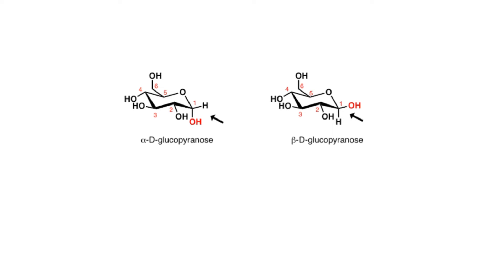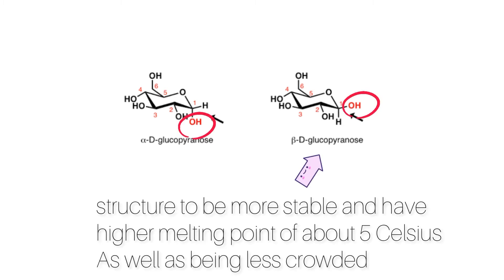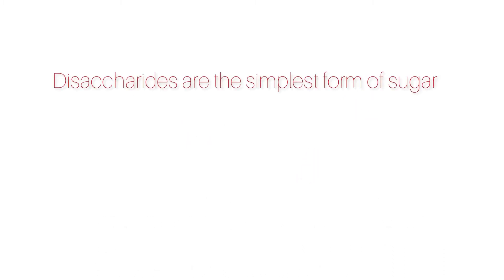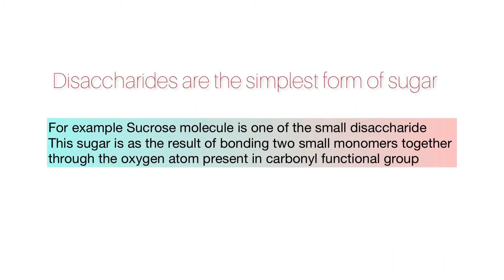In glucose, based on the position of the hydroxyl group of carbon 1 — which is the carbon exactly next to the oxygen atom in the ring — the two ring configurations are alpha and beta. In the alpha ring, the hydroxyl group of carbon 1 is pointing down, while in the beta ring structure the hydroxyl group is upward. This difference in geometrical structure makes the beta structure more stable, with a higher melting point of about 5°C, and it is less crowded.